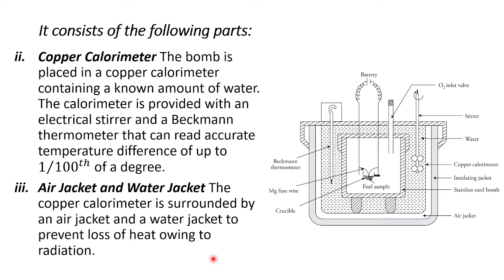The next part is the copper calorimeter. The bomb is placed in a copper calorimeter containing a known amount of water. The calorimeter is provided with an electrical stirrer and a Beckmann thermometer that can read accurate temperature differences of up to one one-hundredth of a degree.